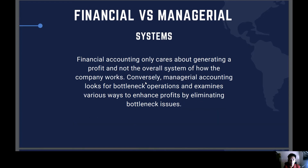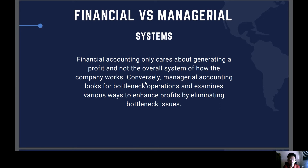Regarding systems: financial accounting only cares about generating a profit and not the overall system of how a company works. Conversely, managerial accounting looks for bottleneck operations and examines various ways to enhance profits by eliminating bottleneck issues. So financial accounting is more on the profit side for external users — outside parties don't really concern themselves with how a company is managed internally. They only want to look at the results: equity, assets, liabilities, cash flow, and other financial reports that can be provided to outside parties.